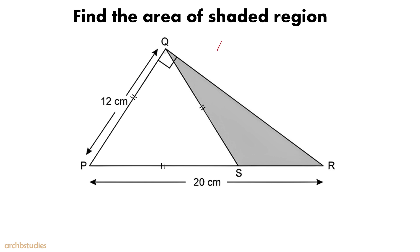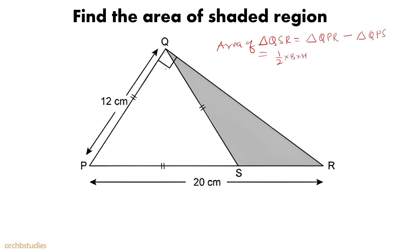In this question we need to find out the area of triangle QSR. Area of triangle QSR will be equal to area of triangle QPR minus the area of triangle QPS. We know that the area of QPR will be 1/2 base into height because it's a right angle triangle, minus area of QPS which will be root 3 by 4 into side squared because QPS is an equilateral triangle.